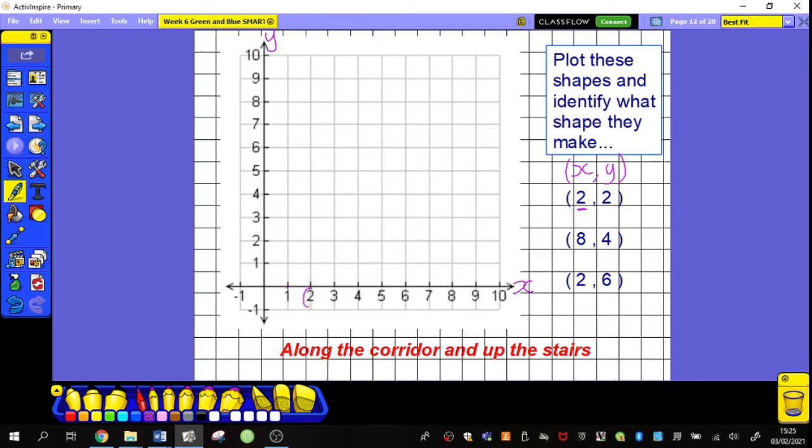In this case will be 2. So I'm going to be counting along 1, 2 there. And I'm going then along the Y axis. So 2 up, 1, 2. So that is my first coordinate. I'm going to rub the rest out so it doesn't... Okay. My next one there. Eight along.